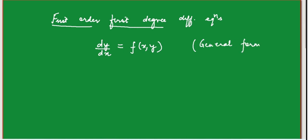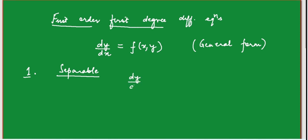There are several categories of first order first degree differential equations, and accordingly we have several techniques for solving them. The first category we'll discuss is the separable type, sometimes called variable separable, because the right-hand side function separates into a function of x times a function of y. Whenever you can express the right-hand side as f(x)·g(y), you call it a separable differential equation.